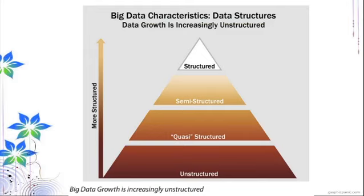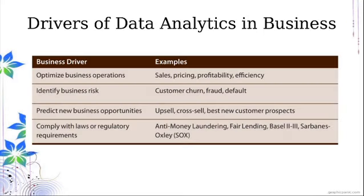In Big Data, what is the population distribution for each data type? Structured data is the least in population. We have far more unstructured data compared to structured data. That is one of the key challenges in data analytics: how do you use unstructured data and extract information from it?